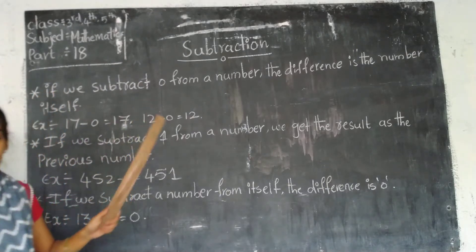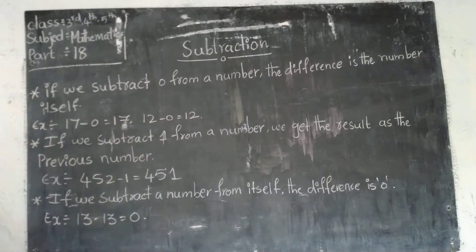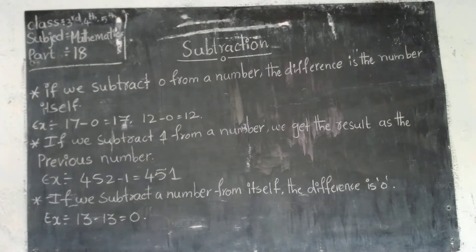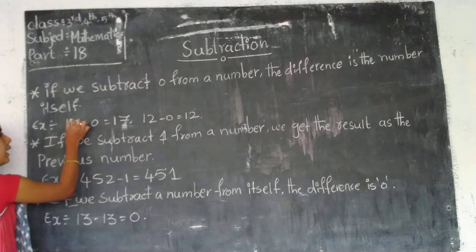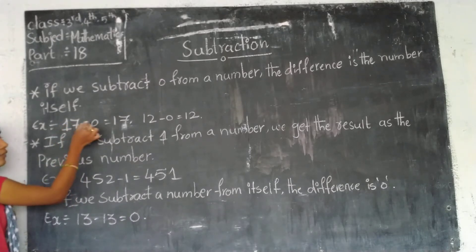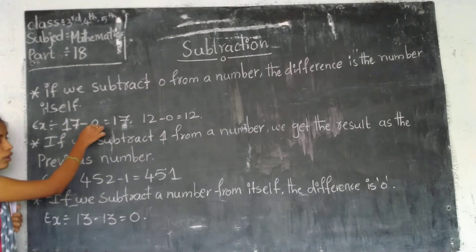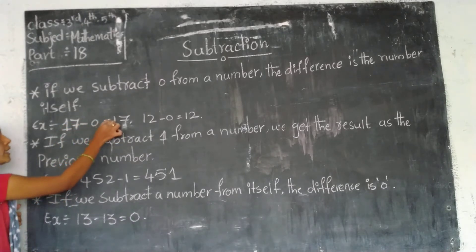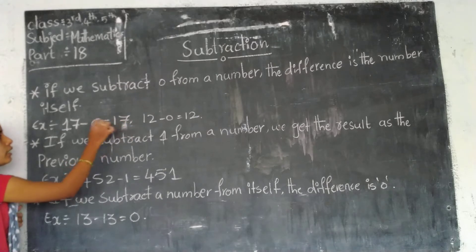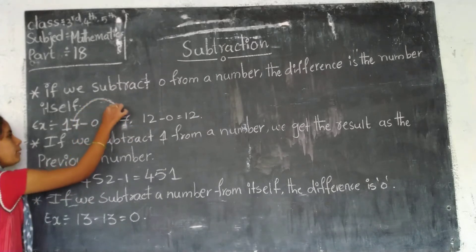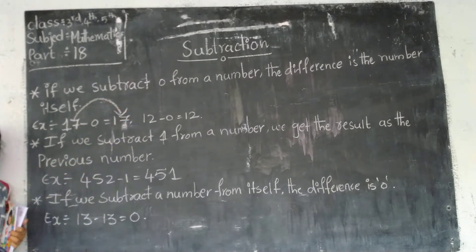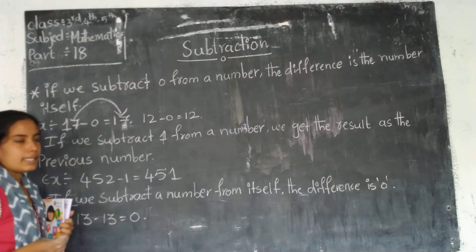If we subtract 0 from a number — what does that mean? If any number has 0 subtracted from it, what is the answer? The same number will appear in the answer's place.